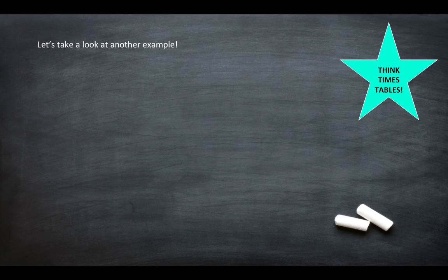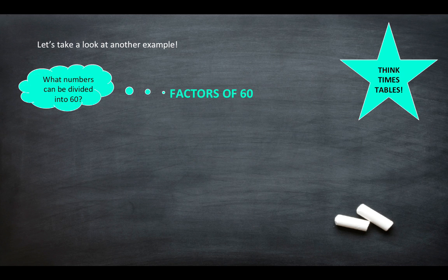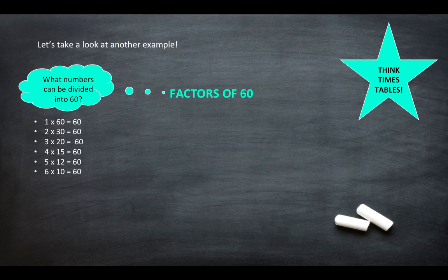So let's take a look at another example. So the factors of 60. So what numbers can be divided into 60. So we've got 1 times 60 is 60, 2 times 30 is 60, 3 times 20 is 60, 4 times 15 is 60, 5 times 12 is 60 and 6 times 10 is 60.